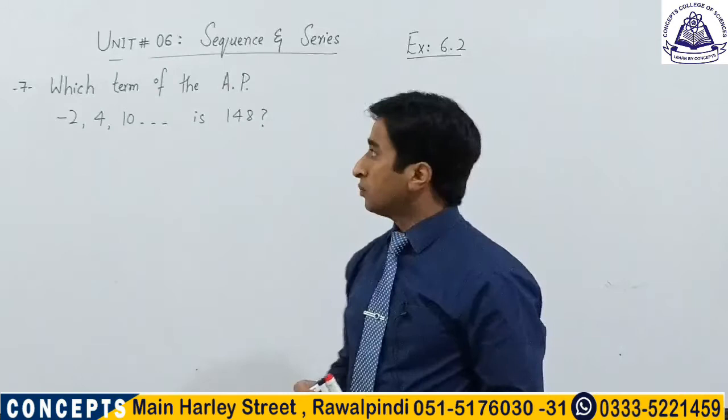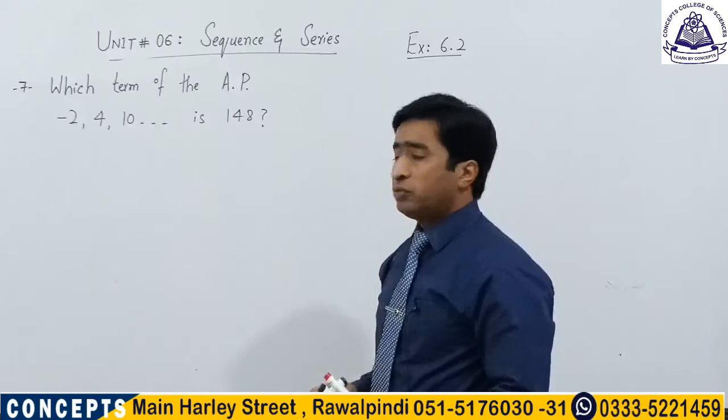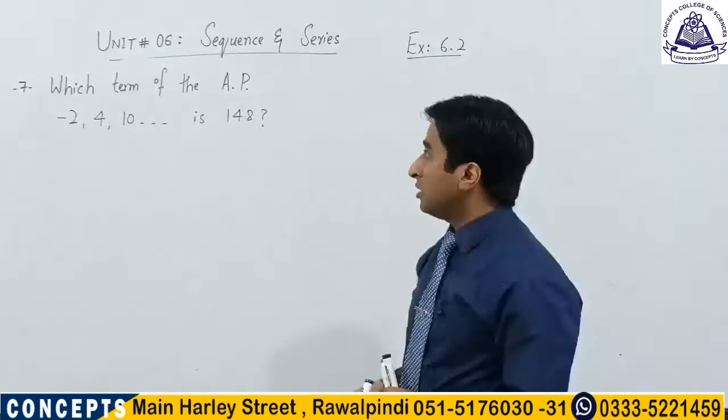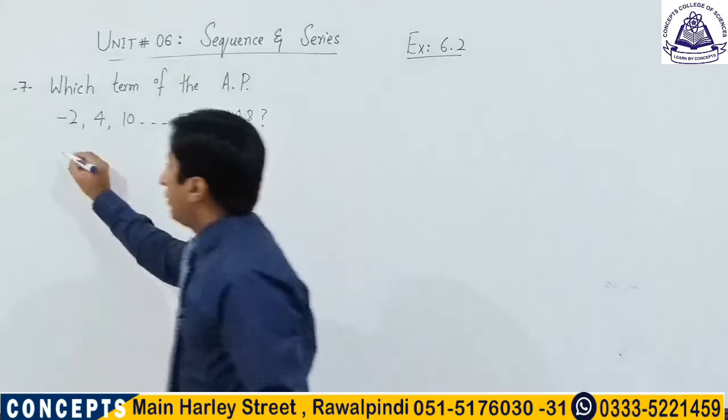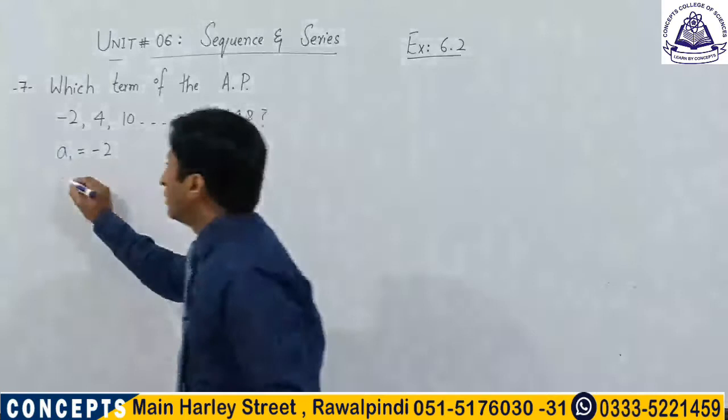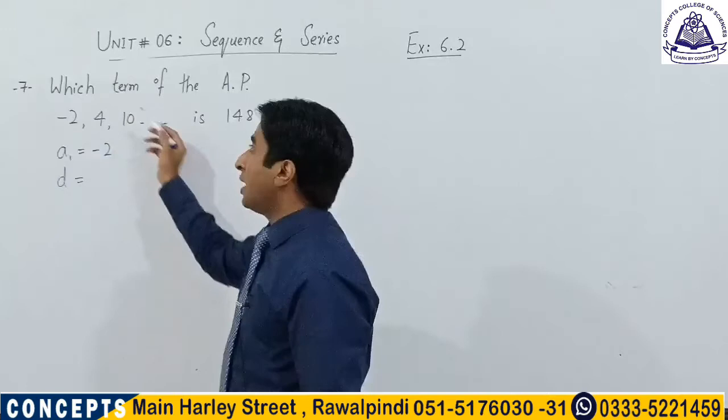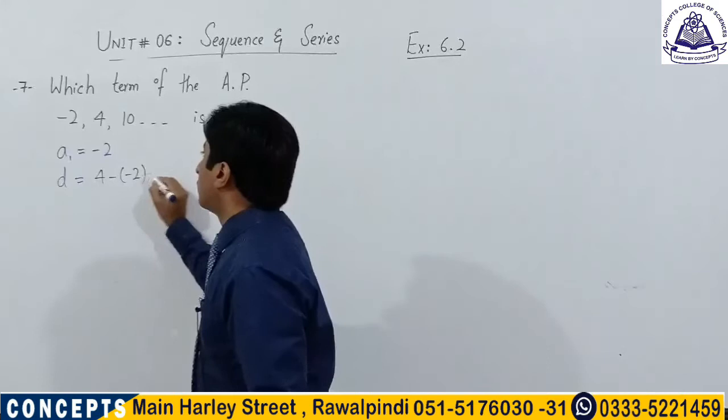Question number 7: Which term of the arithmetic progression −2, 4, 10, ... is 148? Since −2, 4, 10 is an arithmetic progression, we have a1 = −2. The common difference d = 4 − (−2) = 10 − 4 = 6.